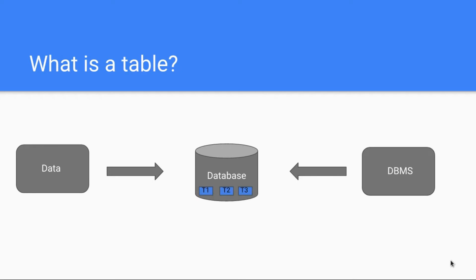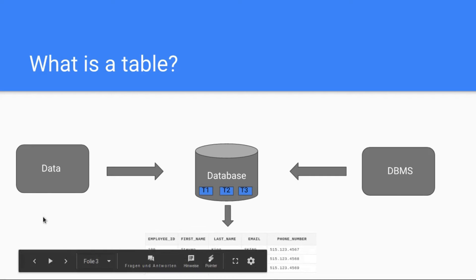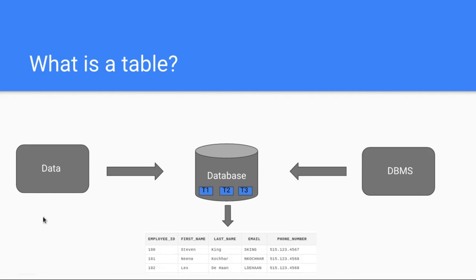The database has several tables — in this case Table 1, Table 2, and Table 3. A table consists of, for example, an Employee ID, First Name, Last Name, Email, and Phone Number. So Employee ID 100 is Stephen King, with his phone number shown here. This can be Table 1. You might already know this from Excel — Excel is a table program, and a database looks just like that.